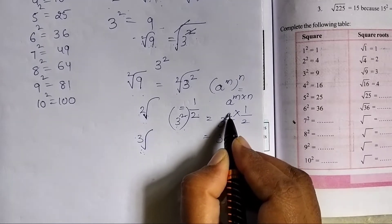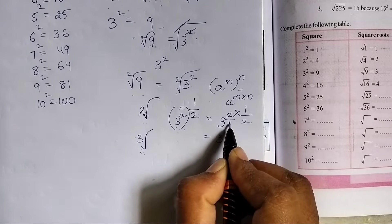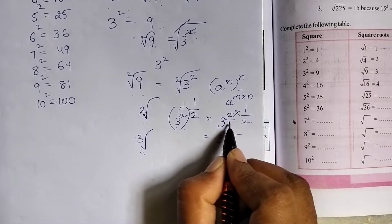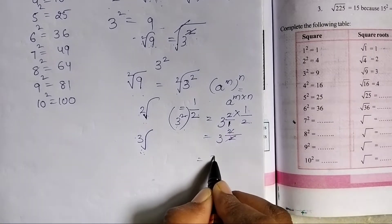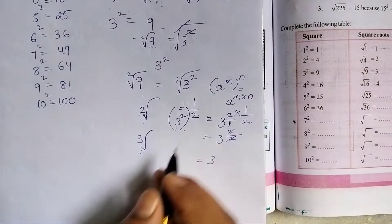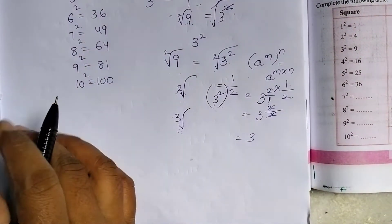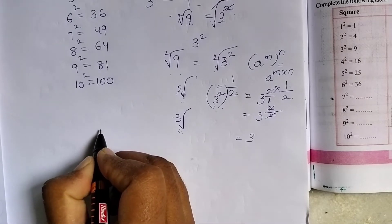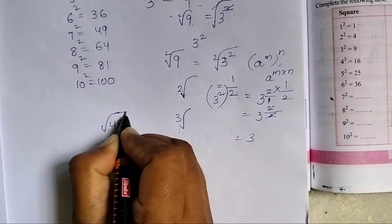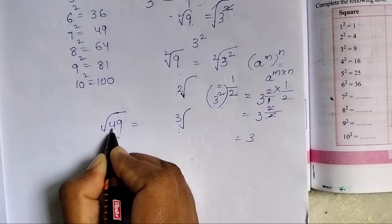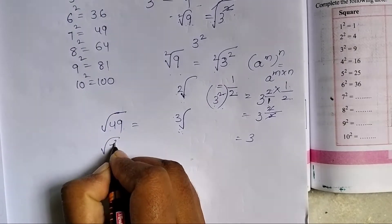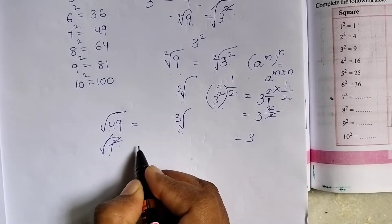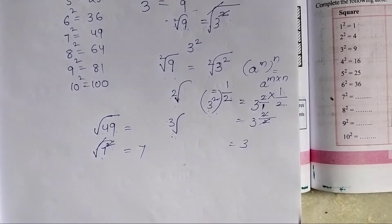We can write fractions: numerator into numerator, denominator into denominator. 2 into 1 is 2, 1 into 2 is 2, giving us 2 over 2 which equals 1. So when you have square roots, you don't need to write the square root sign. For example, root of 49: the value is 7 squared equals 49, therefore the value is 7.